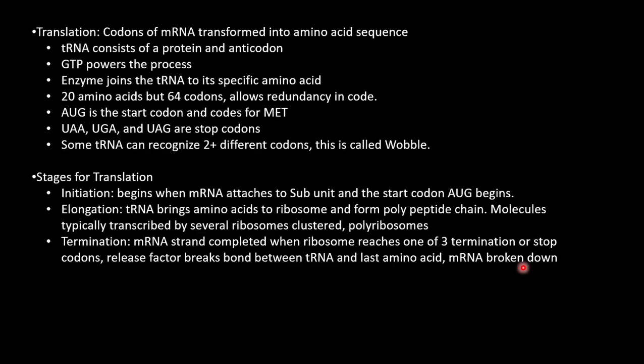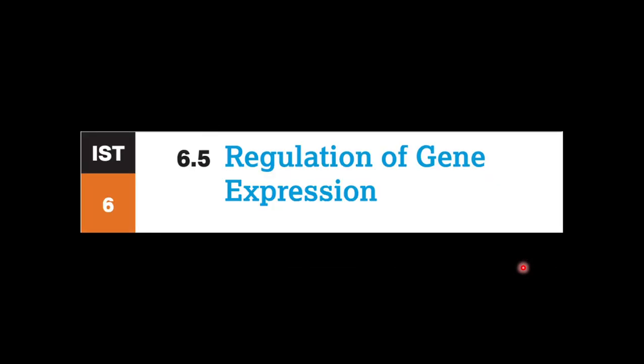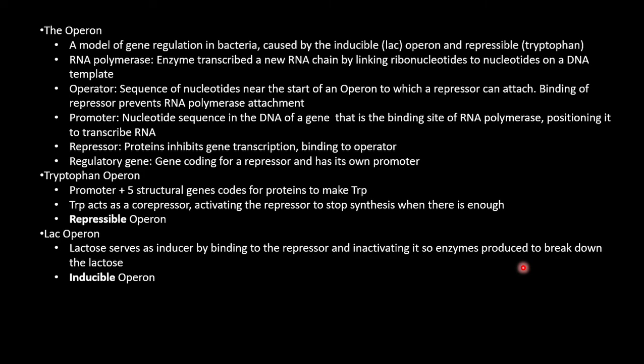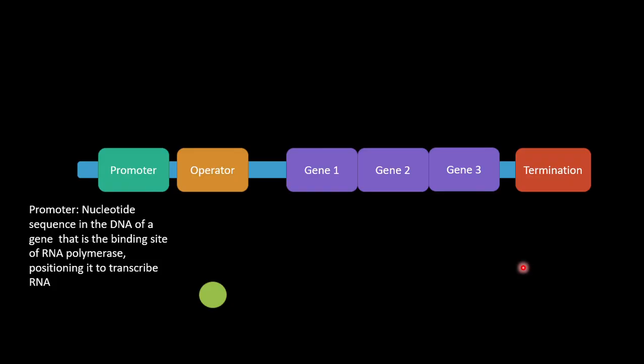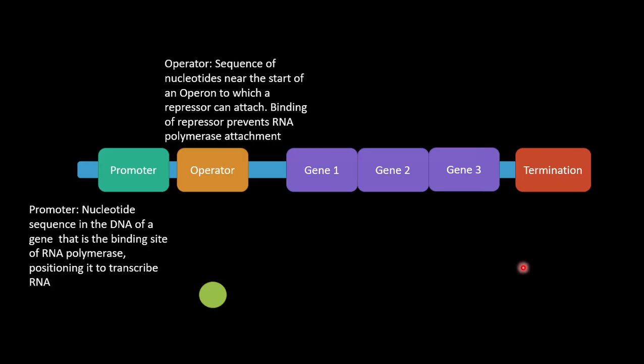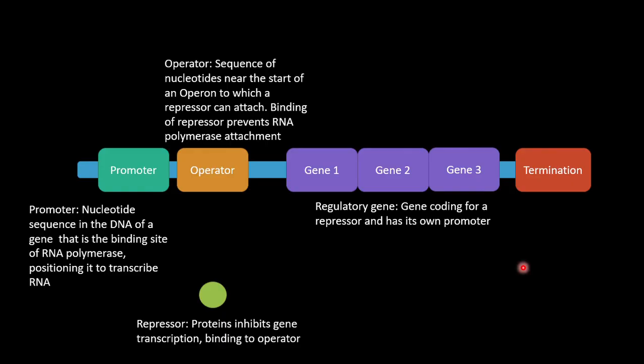In particular, when we're looking at regulation of genes, we'll be looking at the operon. As to the best of our knowledge, it's the way we understand gene regulation. We'll first go over parts of the operon. First, the promoter, which is the nucleotide sequence in the DNA of a gene that is the binding site of RNA polymerase. It positions the polymerase to transcribe RNA. Next is the operator, which is a sequence of nucleotides near the start of the operon to which a repressor can attach. The binding of a repressor prevents RNA polymerase attachment. The repressor is a protein that inhibits gene transcription. Next is the regulatory gene, which is a gene coding for a repressor that has its own promoter.